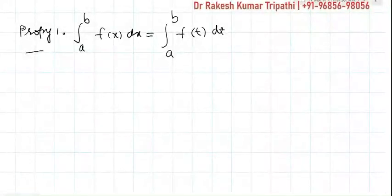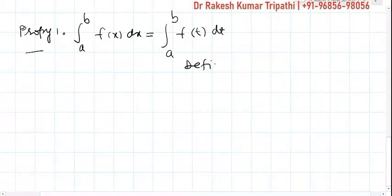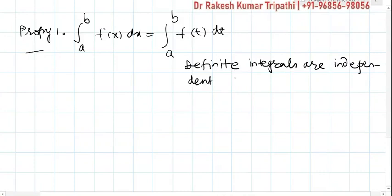The very first property of definite integral says that definite integrals are independent of variables. This means limits must be same and functions in both integrals must be same, whether they are having x or t or y or z or w - it does not make any sense. Let's try to prove this property.